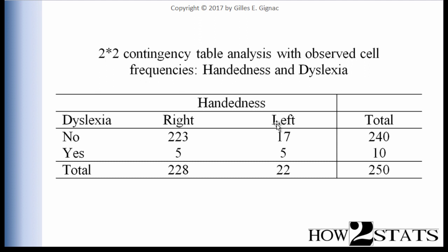It can be more complicated than that. And dyslexia is coded no and yes — so either you have dyslexia or you don't. Again, it could be more complicated, but for the purpose of this analysis we have two dichotomous variables: handedness and dyslexia.